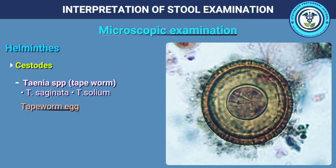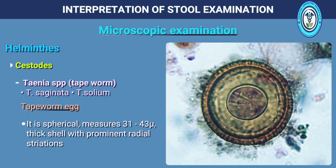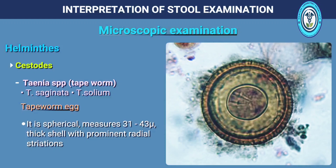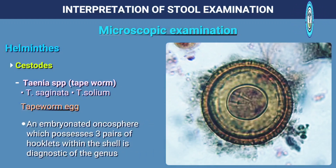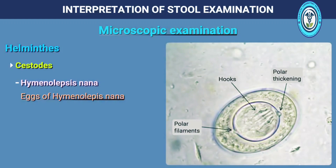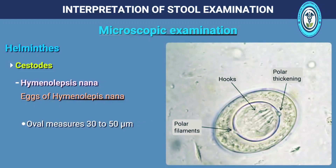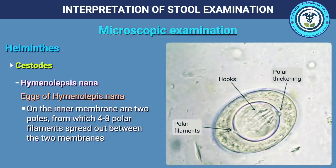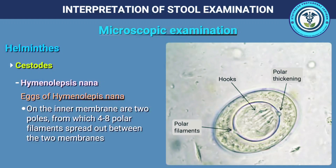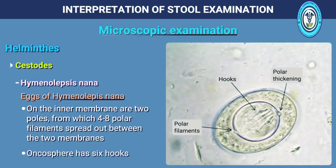Taenia species — Taenia saginata or Taenia solium: the tapeworm egg is spherical, measures 31 to 43 microns, with a thick shell with prominent radial striations. An embryonated oncosphere which possesses 3 pairs of hooklets within the shell is diagnostic of the genus. H. nana eggs are oval, measure 30 to 50 microns; on the inner membrane are 2 poles from which 4 to 8 polar filaments spread out between the 2 membranes, and the oncosphere has 6 hooks.